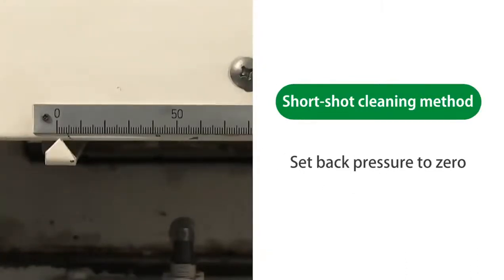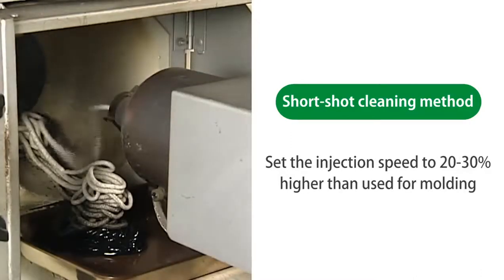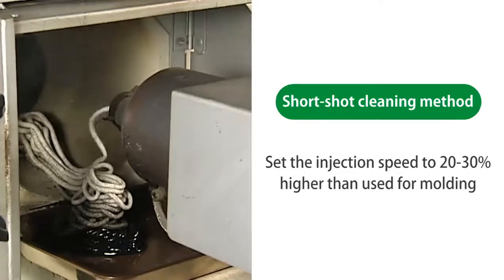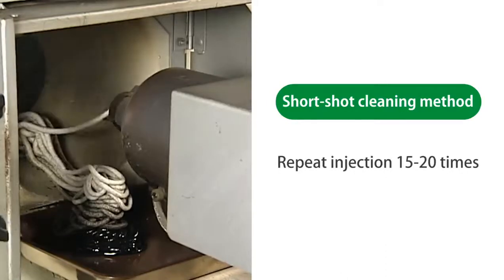Set the back pressure to zero. Set the injection speed to 20 to 30% higher than used for molding. Repeat injection 15 to 20 times.